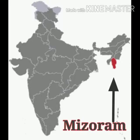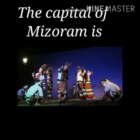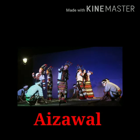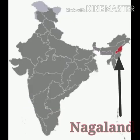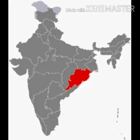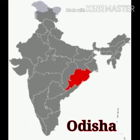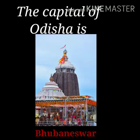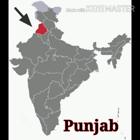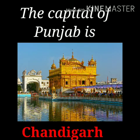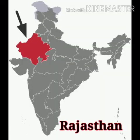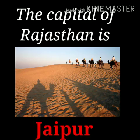Seventeenth is Mizoram. The capital of Mizoram is Aizawl. Eighteenth is Nagaland. The capital of Nagaland is Kohima. Nineteenth is Odisha. The capital of Odisha is Bhubaneswar. Twentieth is Punjab. The capital of Punjab is Chandigarh. Twenty-first is Rajasthan. The capital of Rajasthan is Jaipur.